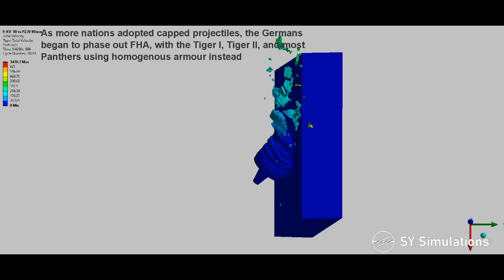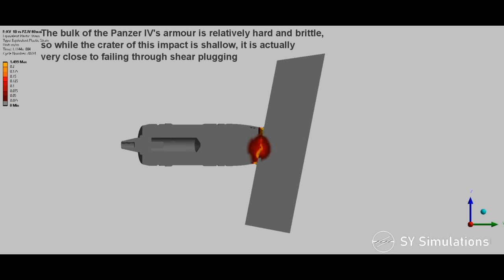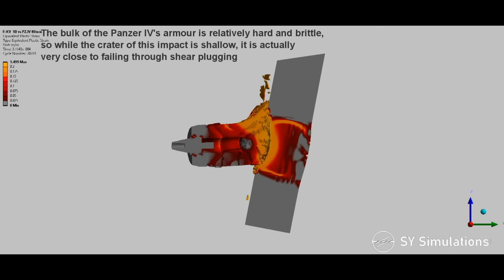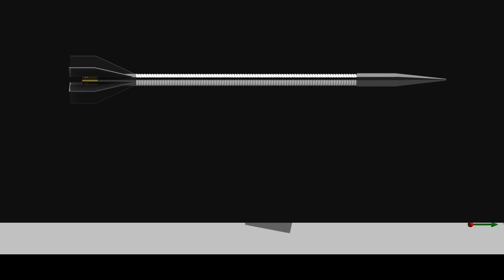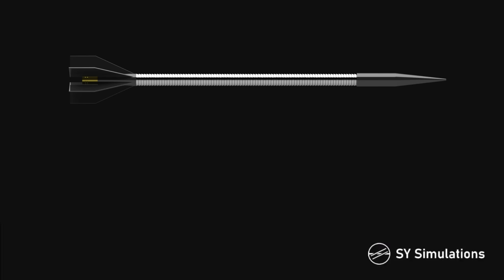The bulk of the Panzer IV's armor is relatively hard and brittle, so while the crater of this impact is shallow, it is actually very close to failing through shear plugging.